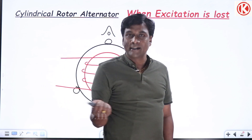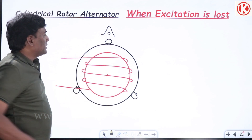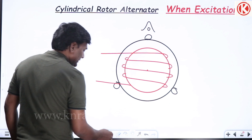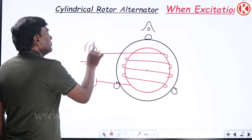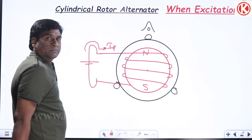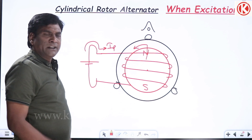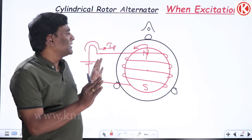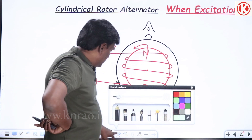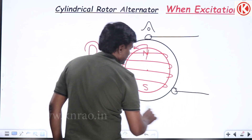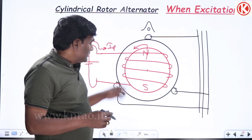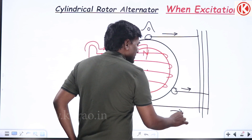When excitation is lost - here, black is the stator and red is the rotor. For the rotor we supply DC field current. The moment DC field current flows, this becomes the N pole and this becomes the S pole. Once I start rotating the rotor, induced voltages will be produced. These three-phase induced voltages, if connected to a load or infinite bus, will supply currents.